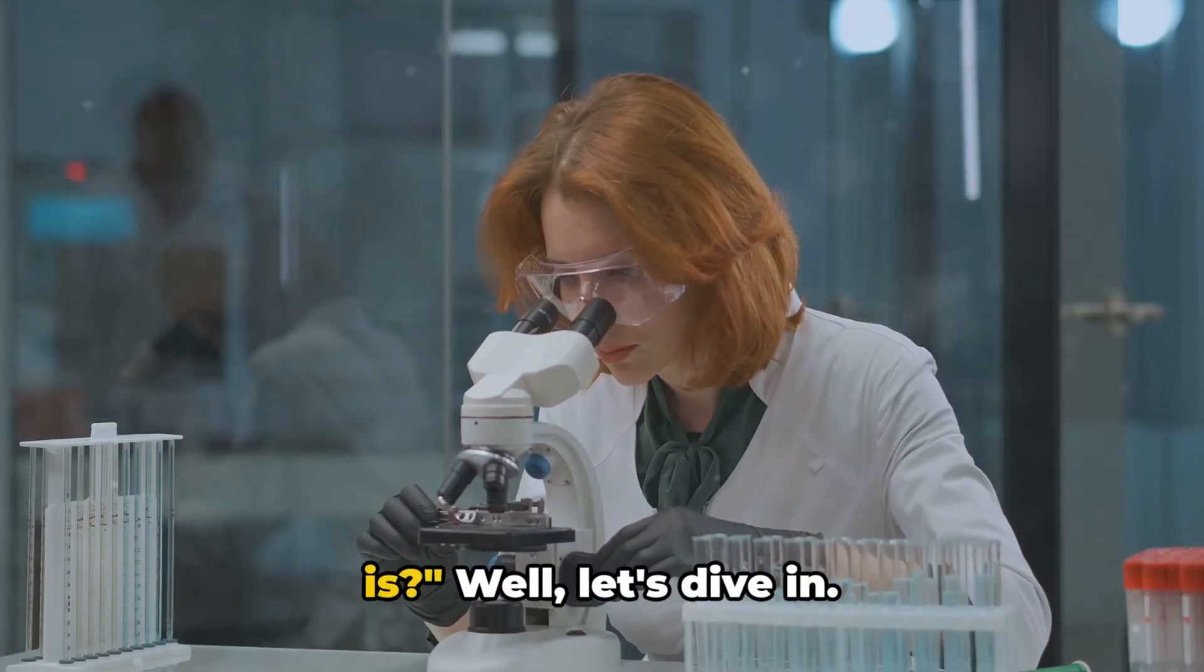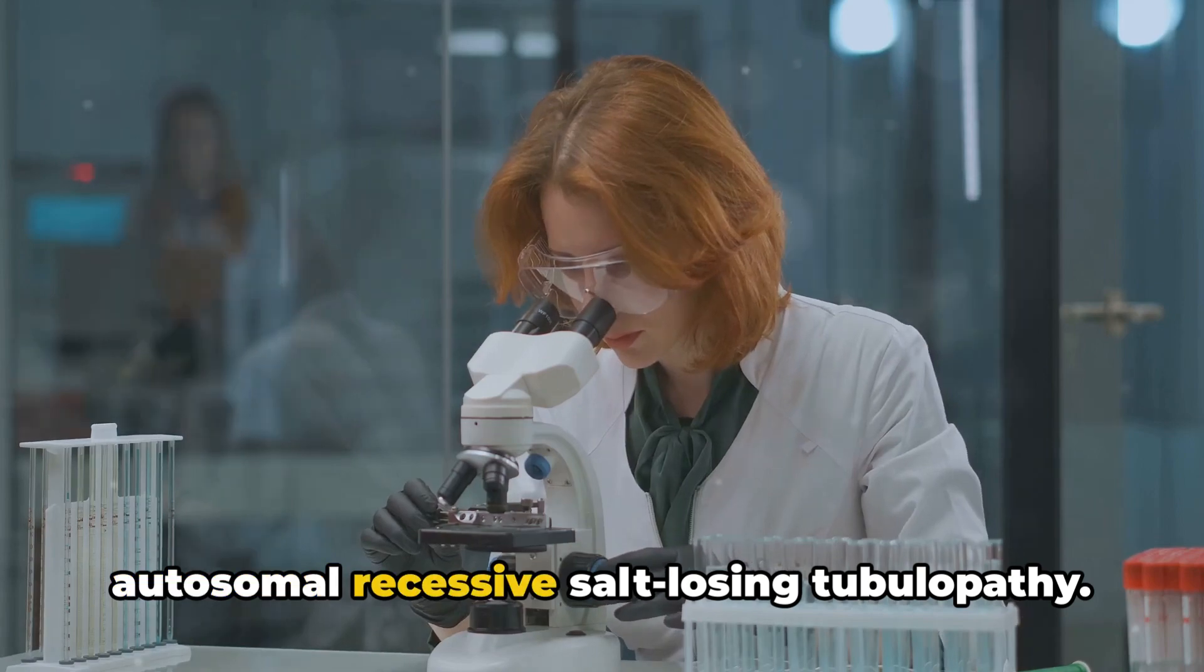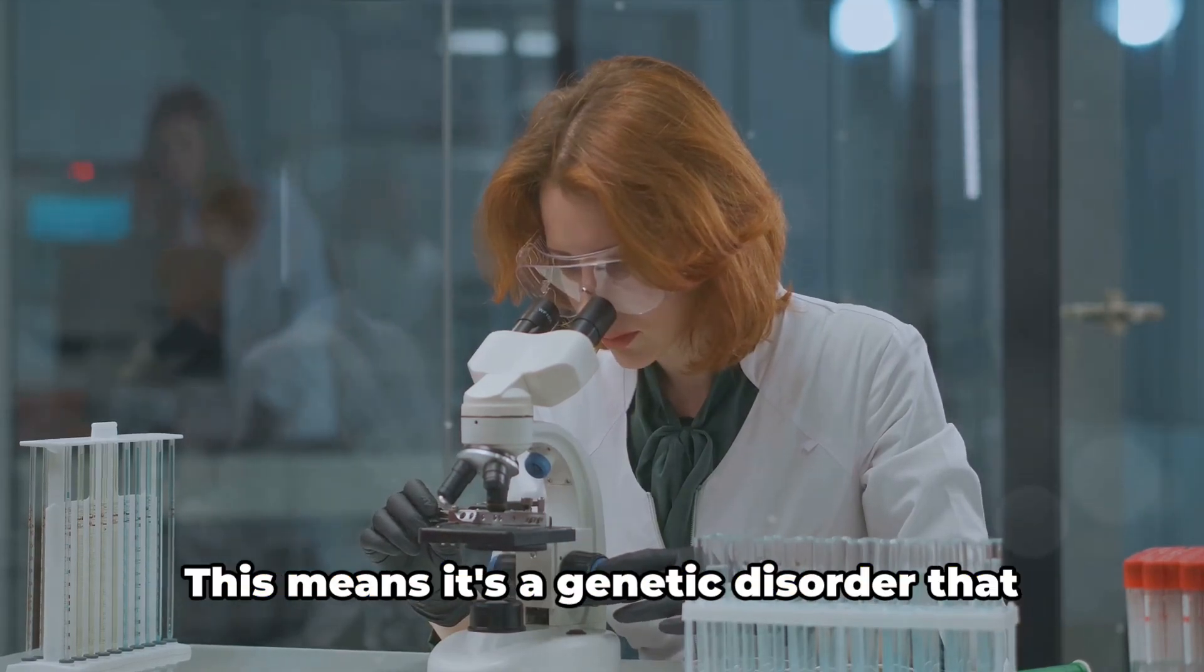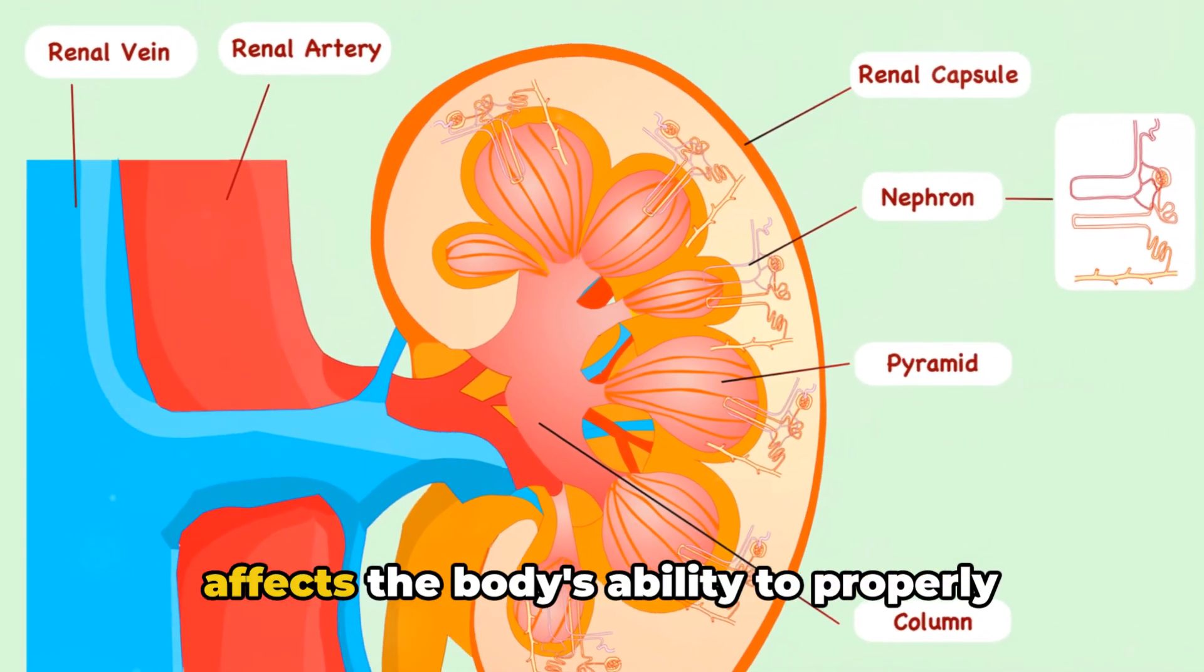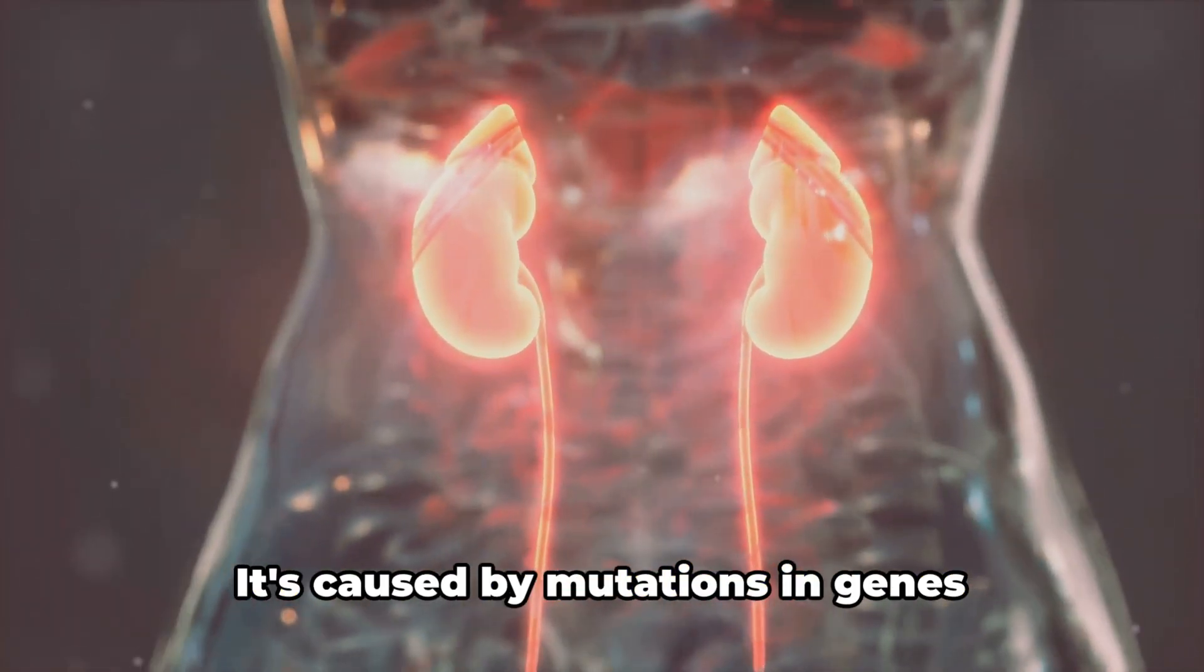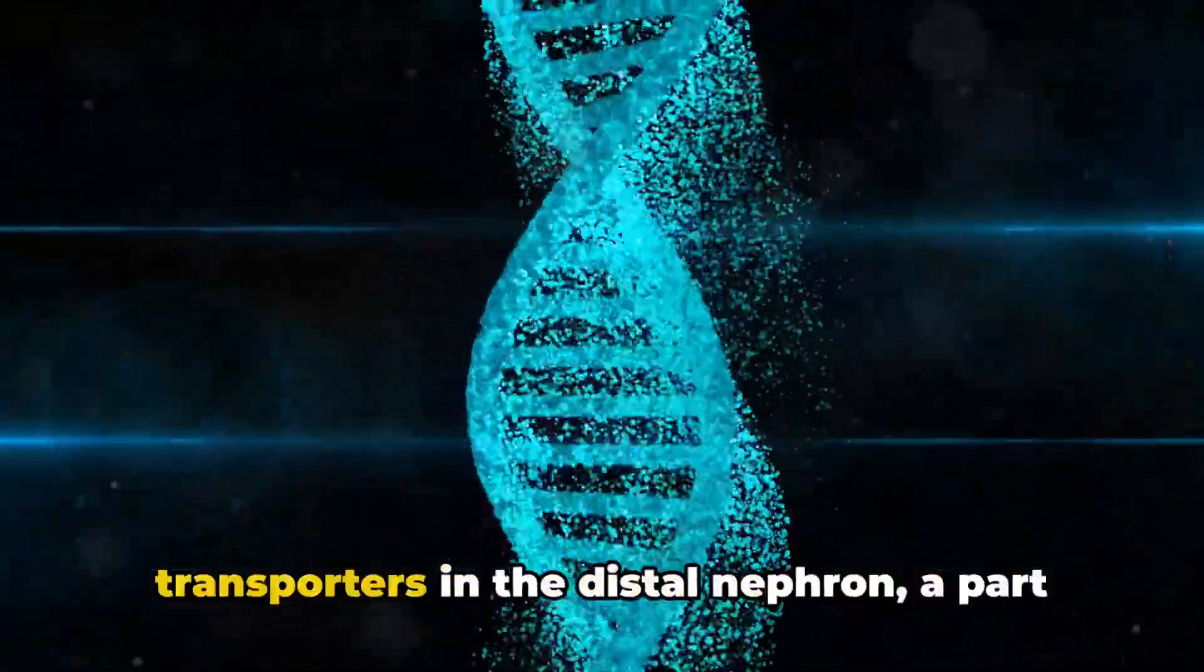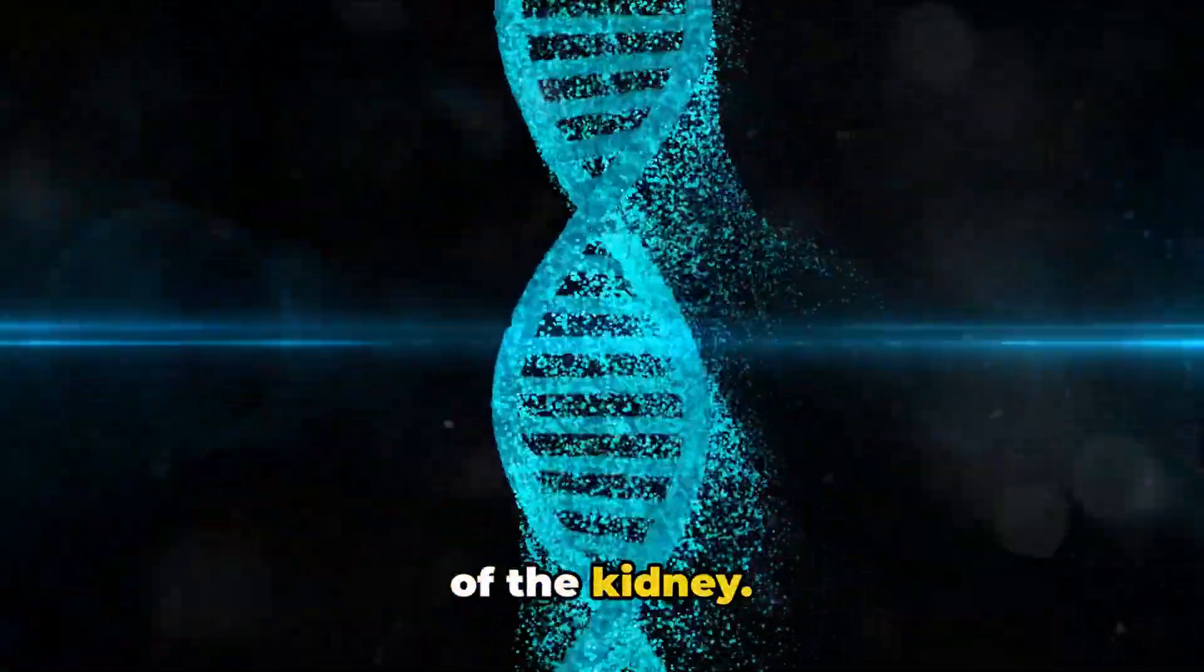Ever wondered what Gitelman syndrome is? Well, let's dive in. Gitelman syndrome is defined as an autosomal recessive salt-losing tubulopathy. This means it's a genetic disorder that affects the body's ability to properly absorb and manage salts in the kidney. It's caused by mutations in genes encoding sodium chloride and magnesium transporters in the distal nephron, a part of the kidney.